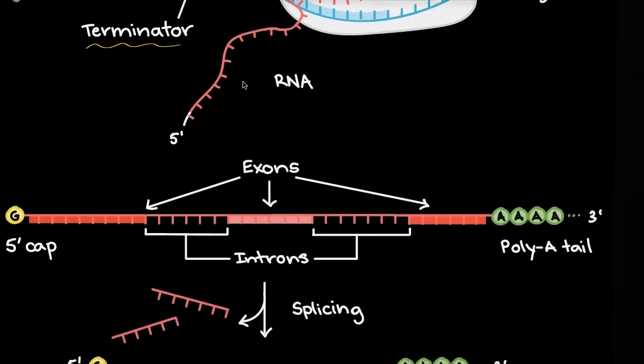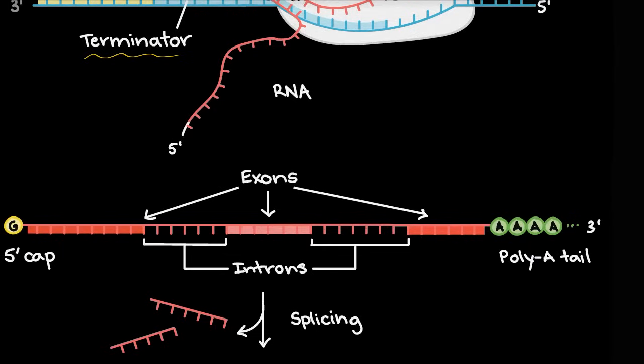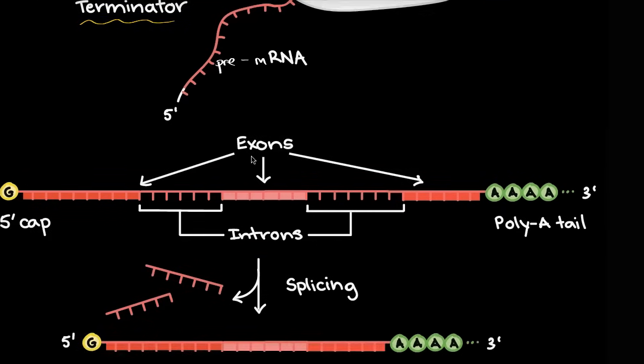But if we're talking about a eukaryote, well then we have to do a little bit of processing. If we're talking about a eukaryote, if this is a prokaryote right over here, this would be our mRNA. If this is a eukaryote, then this is our pre-mRNA, which now has to be processed.